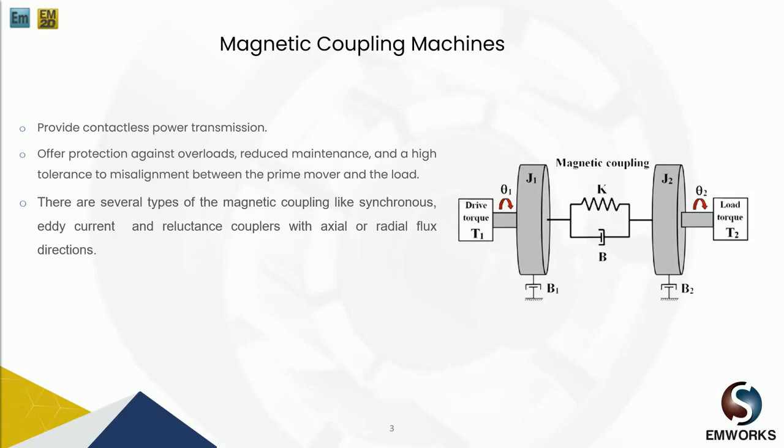Compared to mechanical couplings, magnetic couplings present many advantages such as protection against overloads, lower maintenance, and higher tolerance to misalignments between prime mover and load. There are several types of magnetic couplings: synchronous, eddy current, and reluctance coupling.